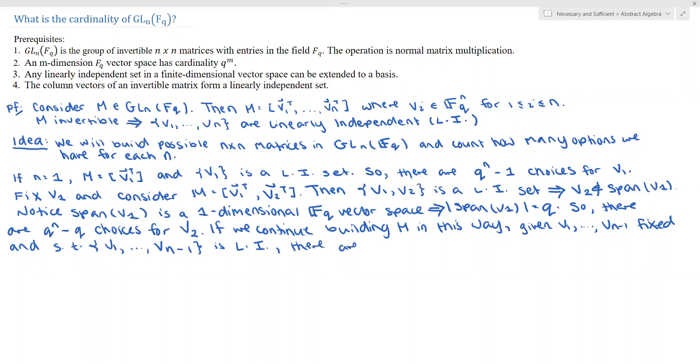And such that the set V1 through Vn minus 1 is linearly independent. There are Q to the n minus, and now we're taking out vectors in an n minus 1 dimensional FQ vector space. So Q to the n minus Q to the n minus 1 choices for Vn. And this is Vn, and this is a Vn that would make our n by n matrix in GLn over FQ.